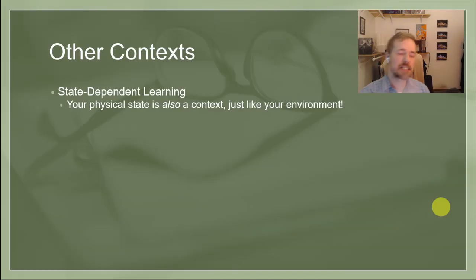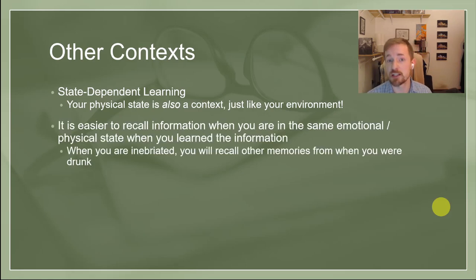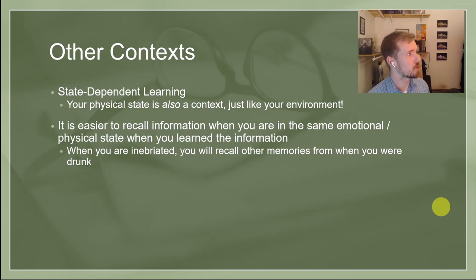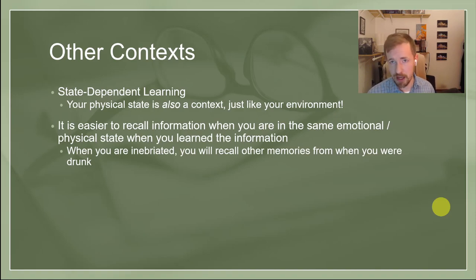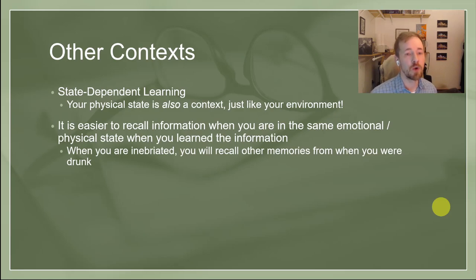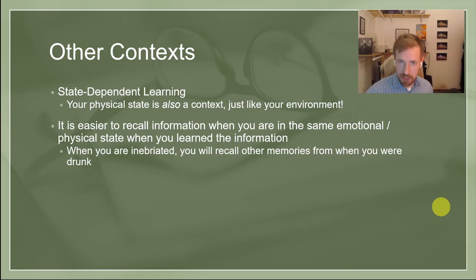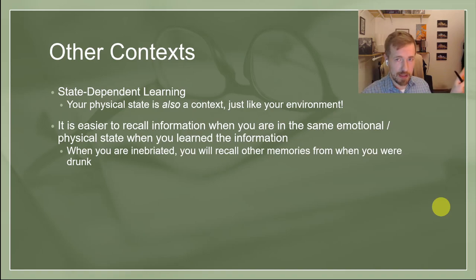This is called context-dependent memory. State-dependent memory is very similar but refers to a physiological state. If you are thinking about your emotional state as a retrieval cue — for example, if you are happy, it's very easy to remember other happy moments from your life. If you are depressed, it's very easy to remember other depressing moments. If you are really depressed, it's hard to retrieve those happy memories, because the closer your retrieval state is to your encoding state, the easier it is to retrieve.